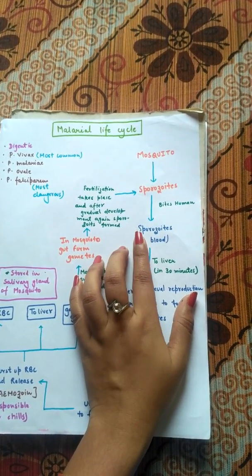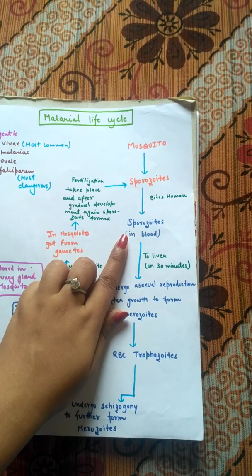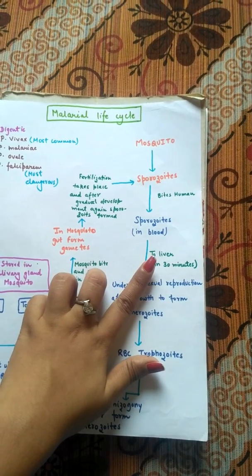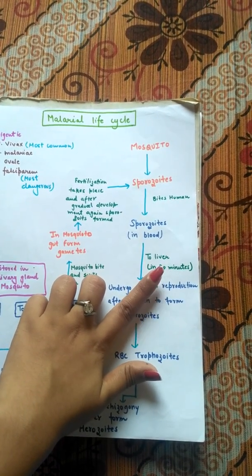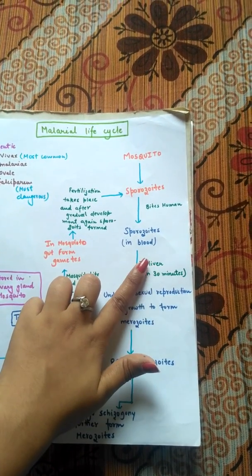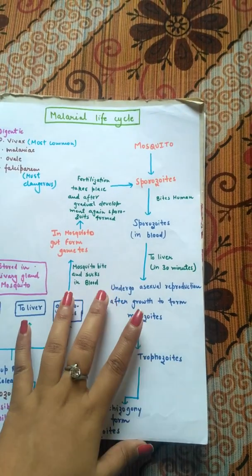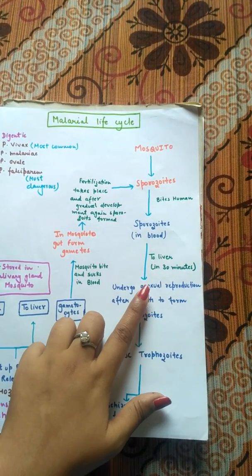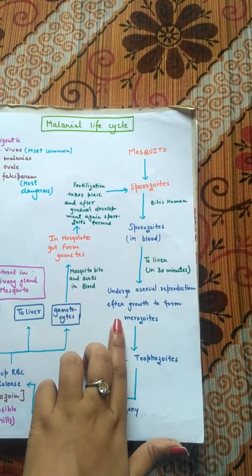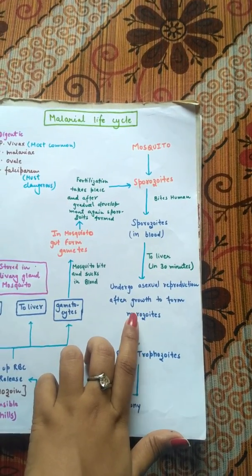After the mosquito bite, sporozoites are present in human blood. Within 30 minutes, these sporozoites reach the liver. In the liver, they undergo asexual reproduction and grow to form merozoites. Merozoites are the next important stage of the protozoa, formed after asexual reproduction in the liver.